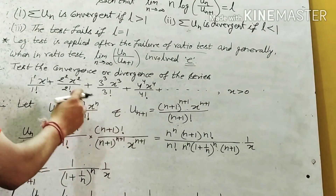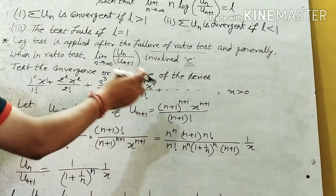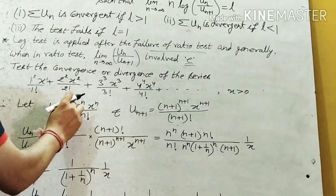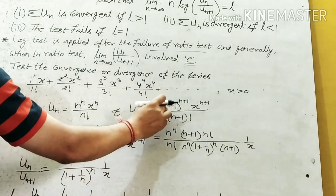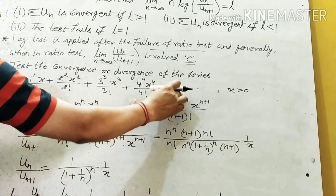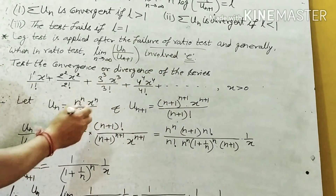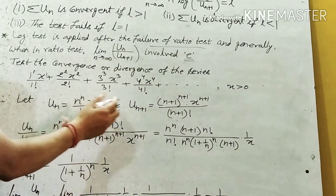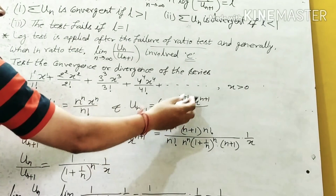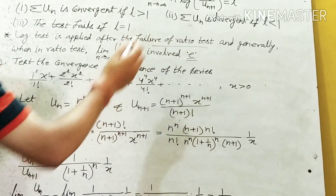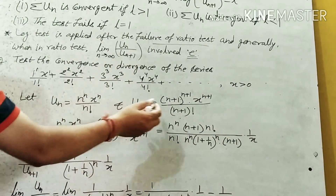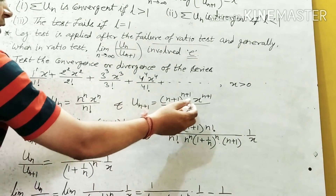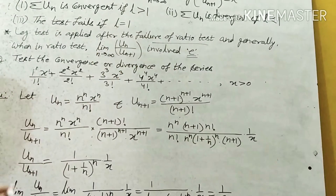And un+1 is obtained by replacing n with n+1: so un+1 = (n+1)^(n+1) · x^(n+1) / (n+1)!.